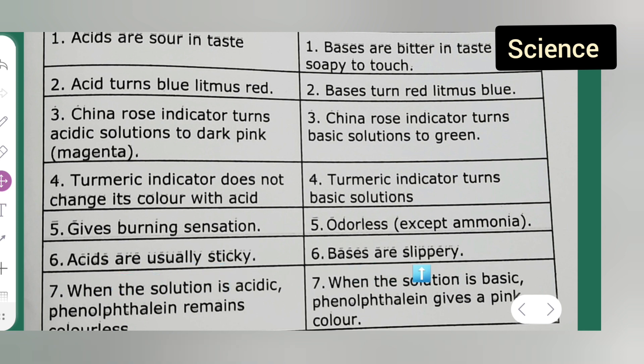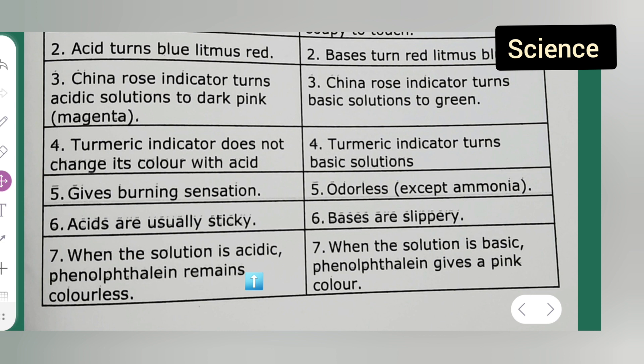Seventh point, last point: when the solution is acidic, phenolphthalein remains colorless. Under acidic, the property says that when the solution is acidic, phenolphthalein remains colorless, whereas in basis when solution is basic, phenolphthalein gives a pink color. If it is basic it will give a pink color.